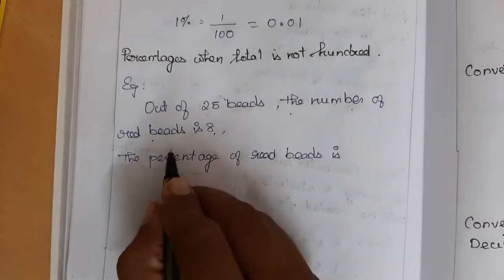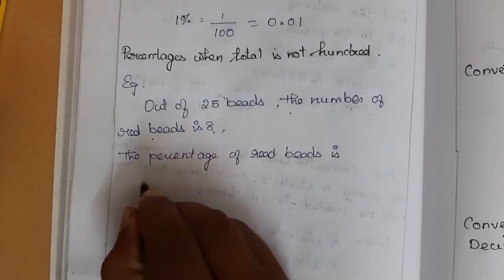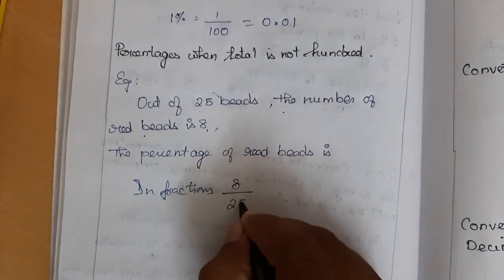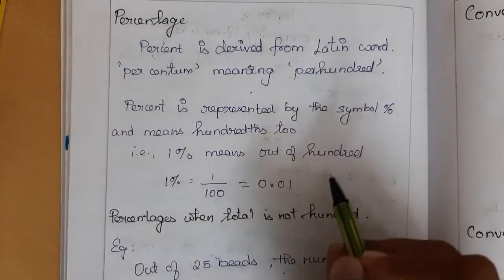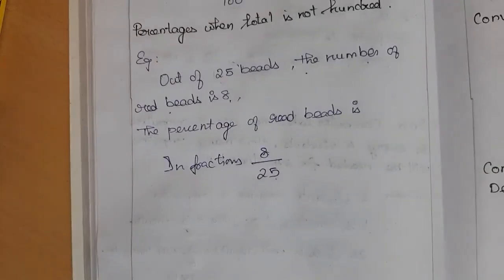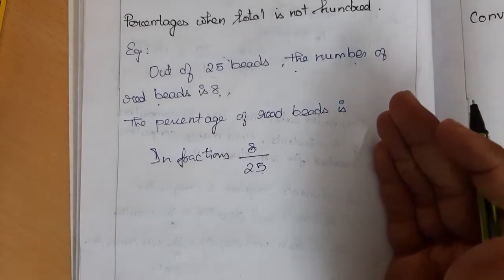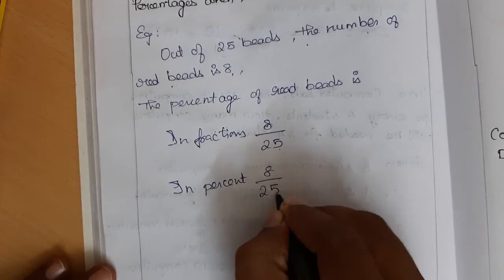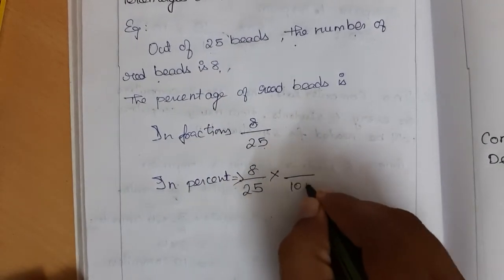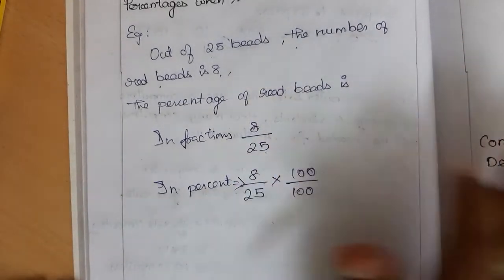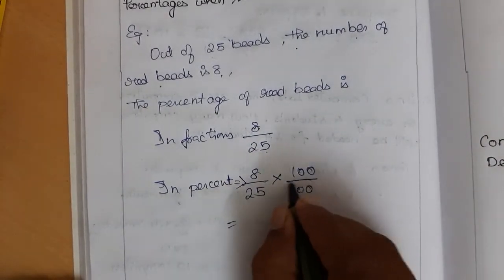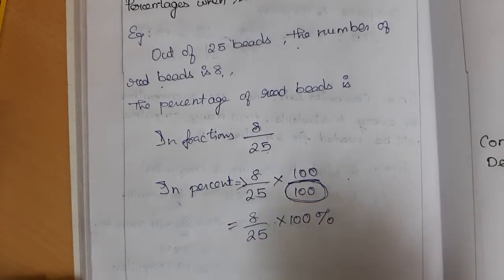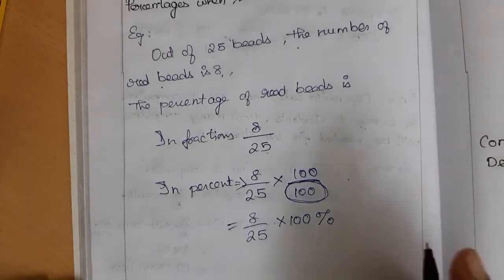Percentage means per hundred, but here the total is 25, so we have to find this for hundred. In fraction form, we have 8 divided by the whole 25 — out of 25 we have 8. But we have to find out of hundred, so we multiply: 8 by 25, then multiply by 100 and divide by 100. Multiplying and dividing by the same number doesn't change the value.